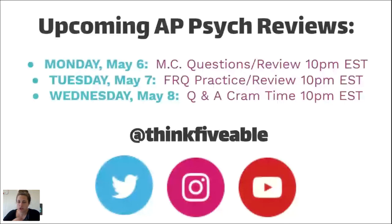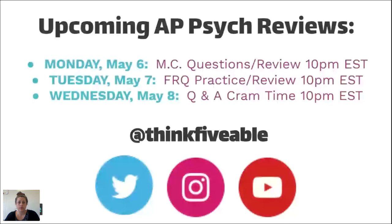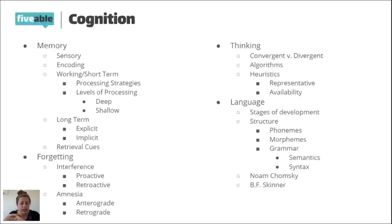The first chunk we're reviewing is cognition, which is a big unit with a lot of information. For the memory part, you need to understand the whole process: from sensory info coming in, how we encode that memory, working/short-term memory, how we process that information, our various forms of long-term memory — explicit versus implicit — how we use retrieval cues, and then forgetting. The two main ways we forget are through interference and amnesia.